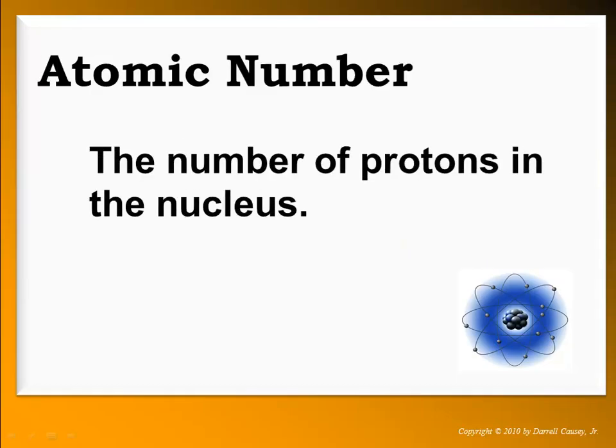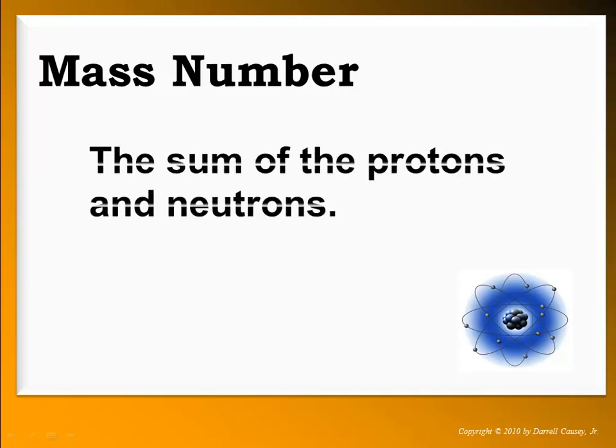The atomic number is the number of protons in the nucleus. The mass number is the number of protons and neutrons. If you're not sure about any of those, go back and review this part. Make sure that you know the mass number, the atomic number, and where the charge goes.